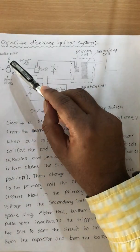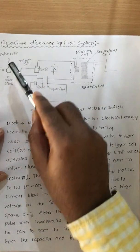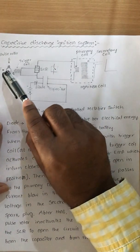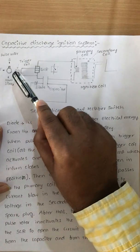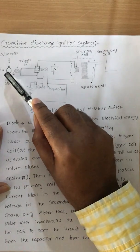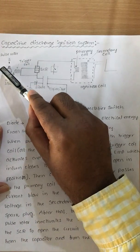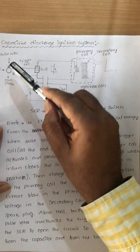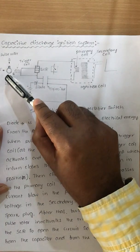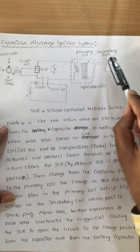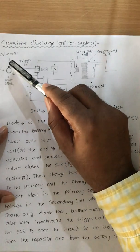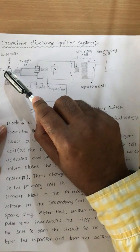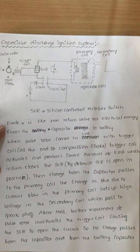For a multi-cylinder engine, for example a two-cylinder engine, the profiles on the pulse rotor correspond to each cylinder's firing event. The profile aligning with the trigger coil at the end of the compression stroke triggers the spark. For a two-cylinder engine, two profiles are placed on the pulse rotor; for a three-cylinder engine, three profiles are used. This is how the system is arranged for multi-cylinder engines.